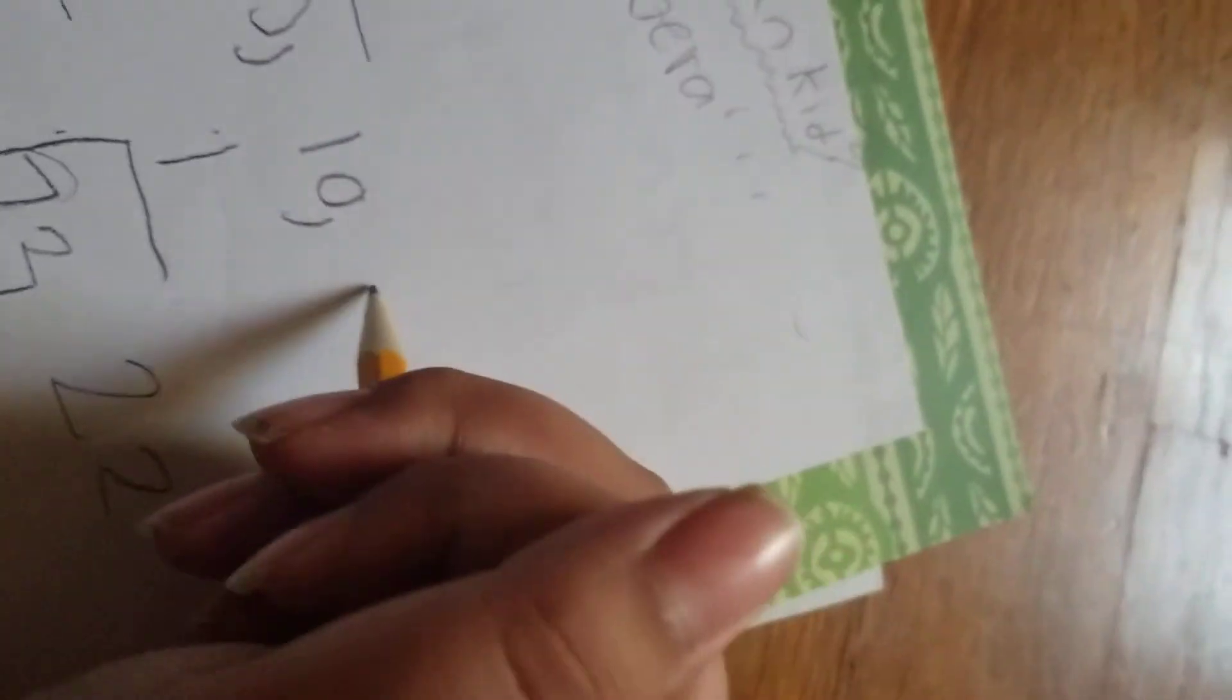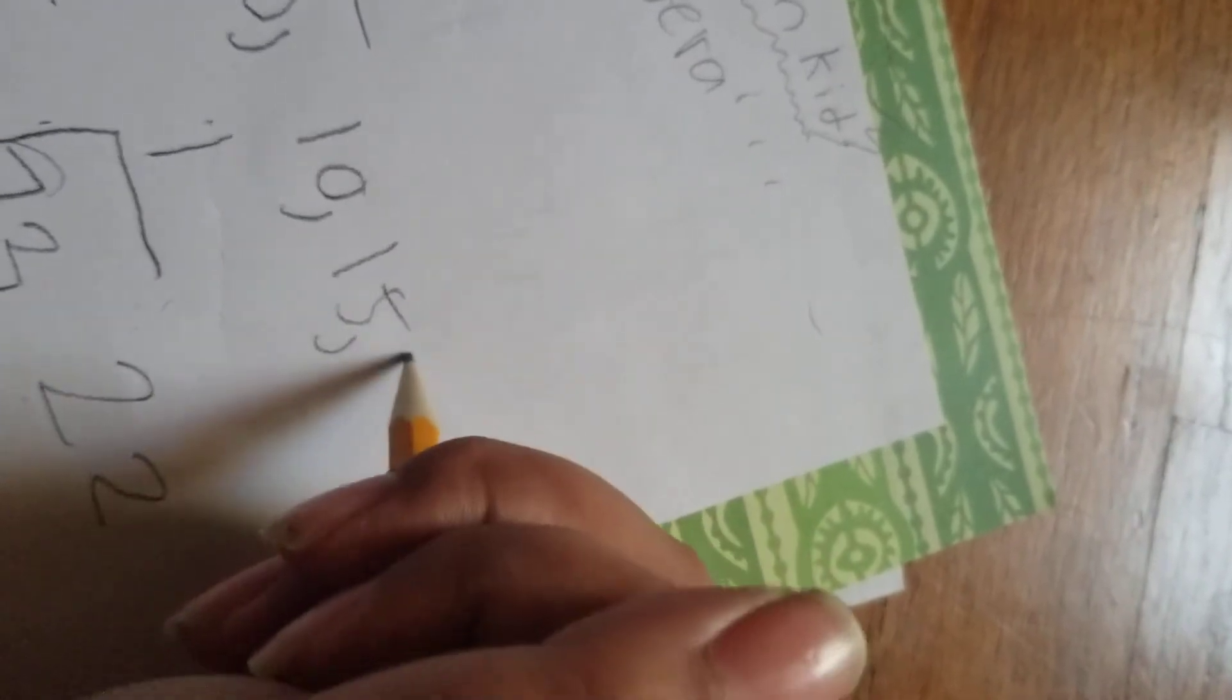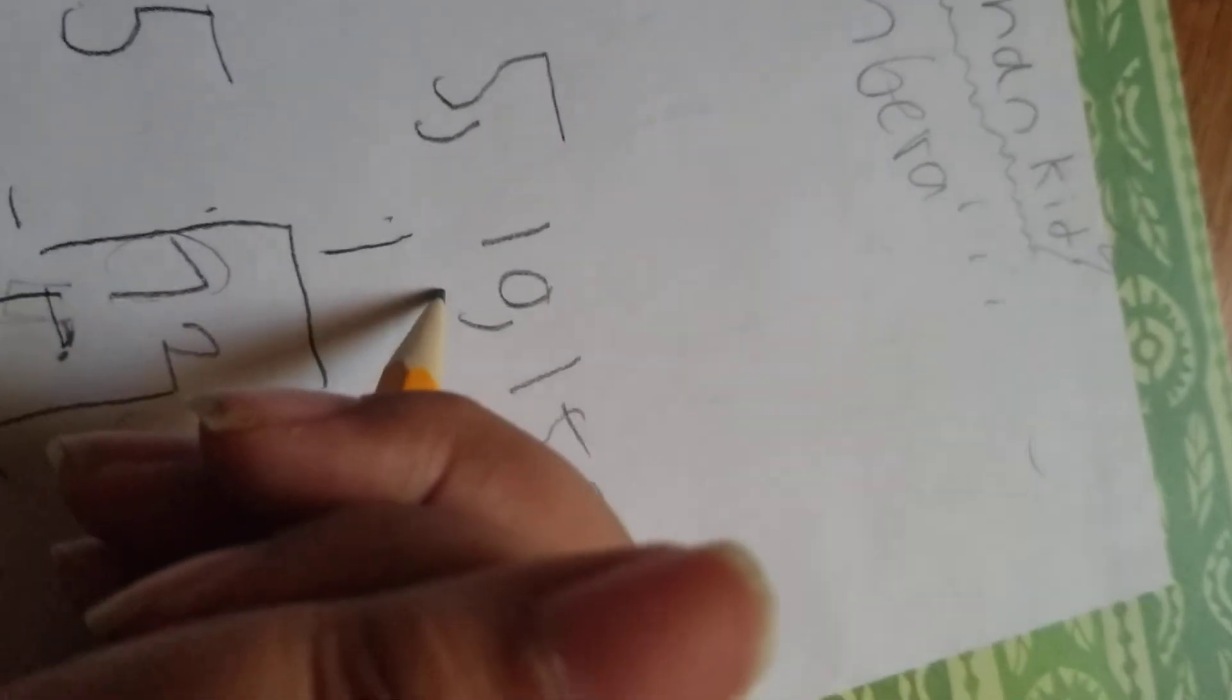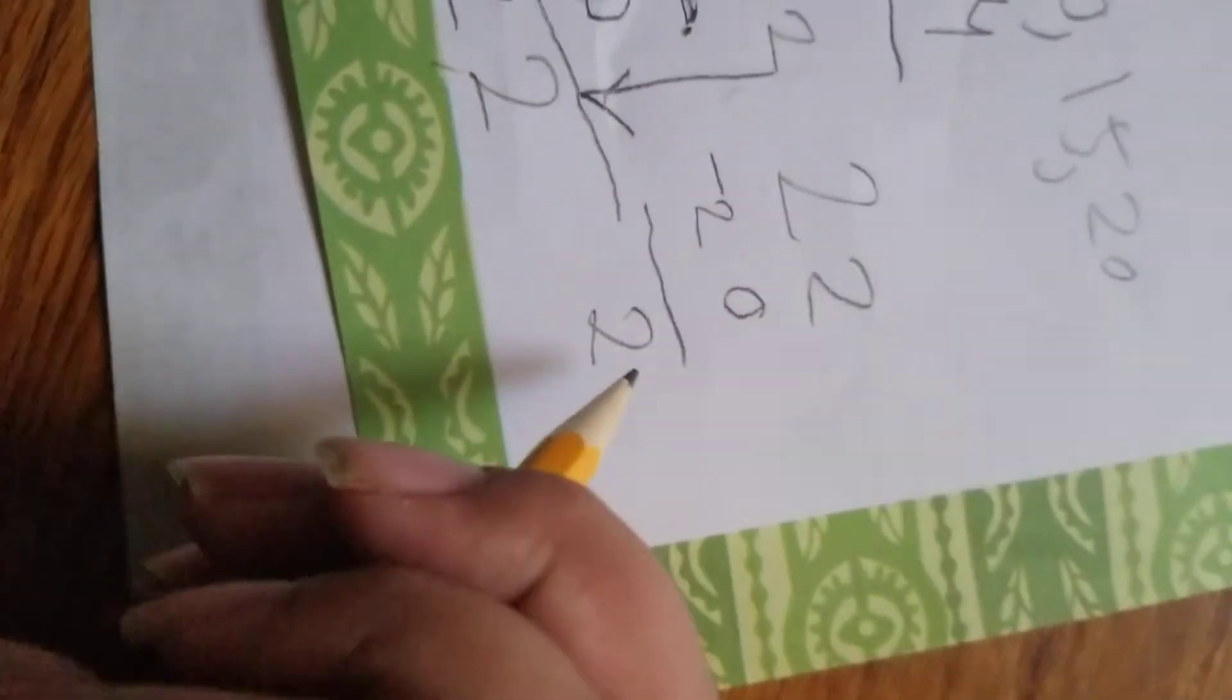And then you subtract it by 20. 22 minus 20, and then that's gonna be two.